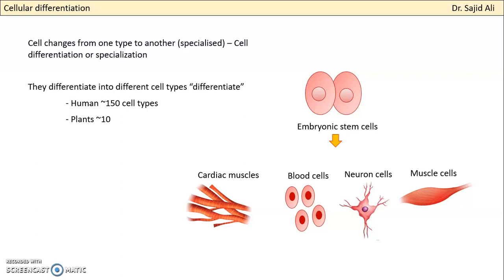If you have a human being, the differentiation will give you only human cells — it will not give you cells of another species. You have the basic information encoded for that species. In humans, you have more than 150 cell types, depending on how you categorize them. In plants, you have relatively fewer — up to around 10 types of cells.